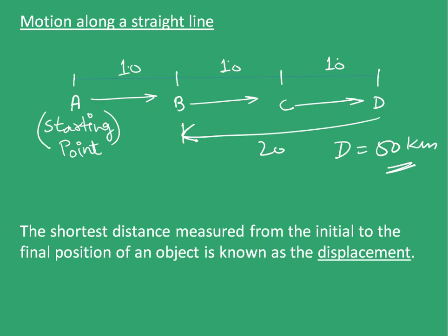Here, the final position of object is position B. The initial position of object is position A. So the shortest distance between these two positions is 10 kilometers. So the displacement in this example is equal to 10 kilometers.